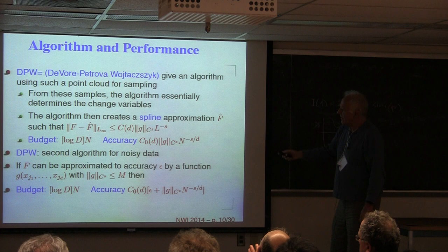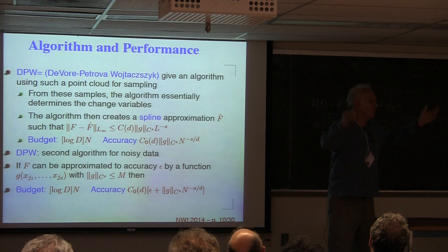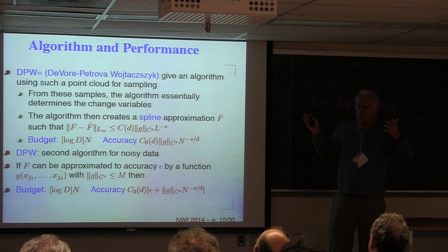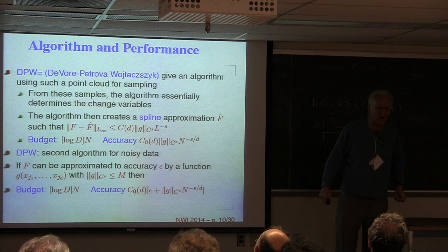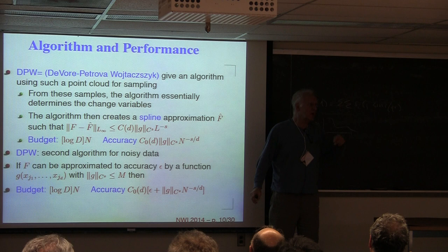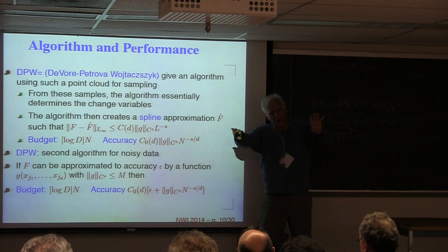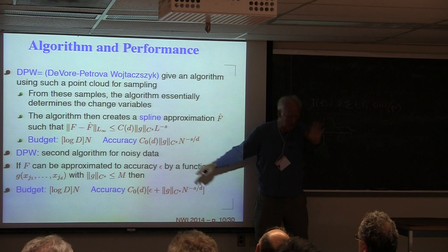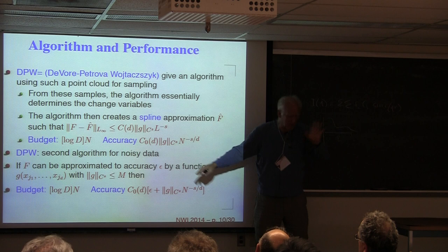A second theorem says that if you apply the same algorithm but it turns out the function isn't exactly a function of d variables, it's still okay as long as the function is close to one that depends on only d variables. If the other variables have weak influence on the function, this will still work.